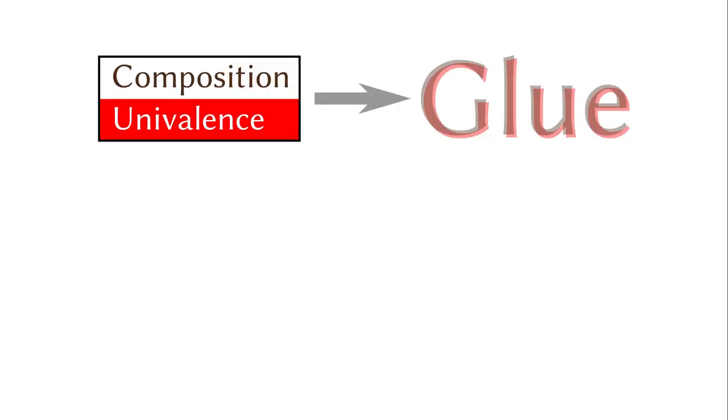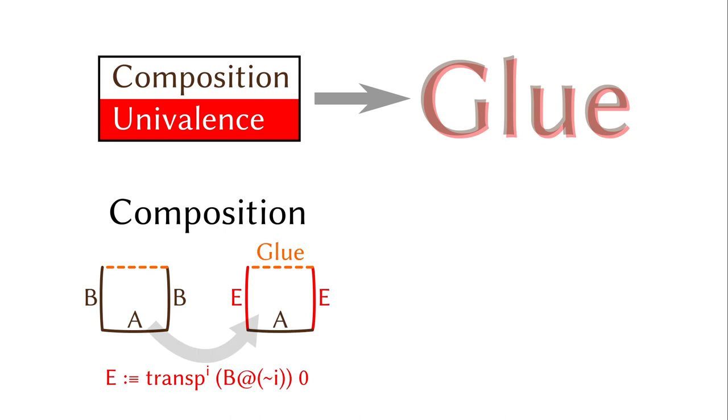Before moving to the count operations of the glue types, let's make sure we can derive both composition and univalence. For composition, suppose we have a box in the universe. We can consider coercion along paths, which is always an equivalence, then construct the solution using the glue type. You need to flip the coercion direction because the equivalence is from top to bottom while the box is from bottom to top.